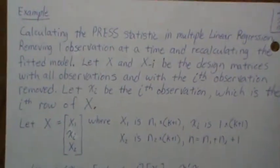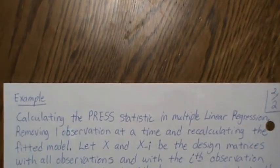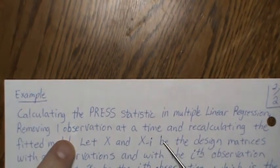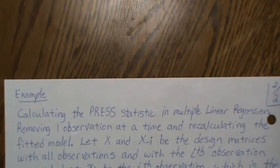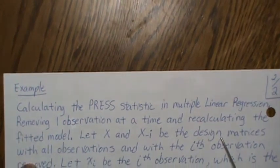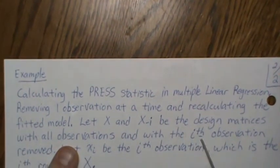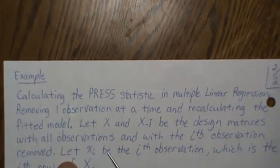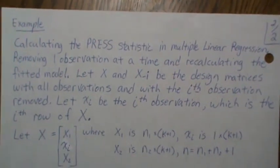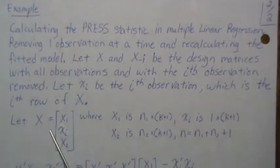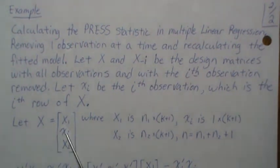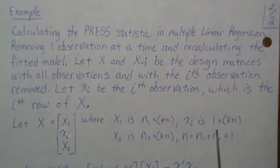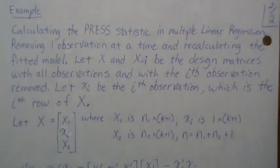The example comes from multiple linear regression, where we calculate something called the PRESS statistic, which involves removing one observation at a time and recalculating the fitted model. Let X and X-minus-i be the design matrices — X with all observations and X-minus-i with the i-th observation removed. Let the script x_i be the i-th observation, essentially the i-th row of the design matrix X. So X is the full matrix, x_i is a row vector of dimension 1-by-(k+1), and X-minus-i is the reduced matrix.